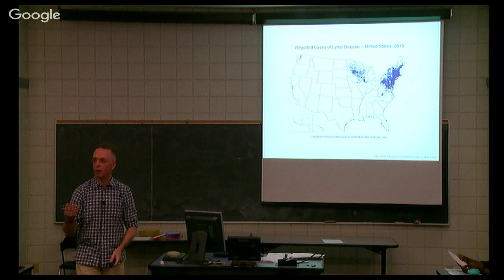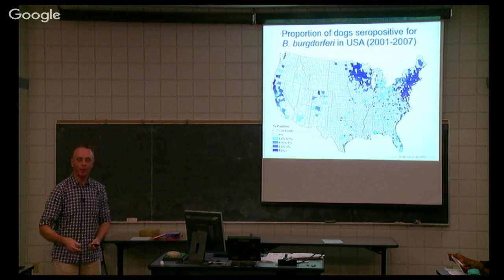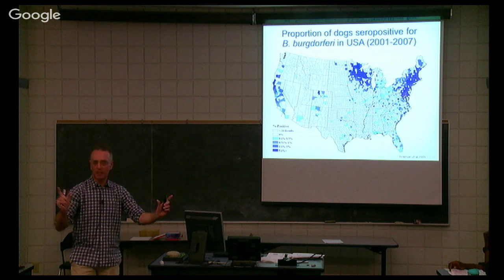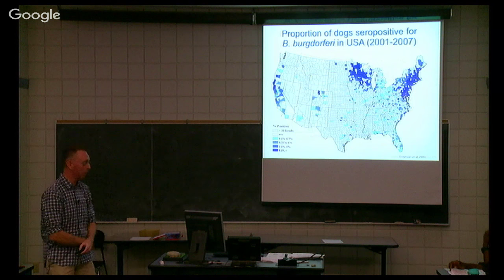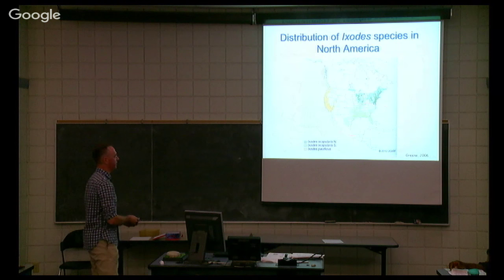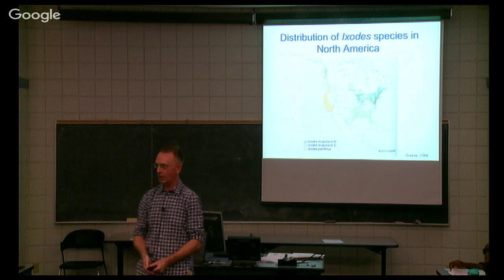What do we see in dogs? Looking at seroprevalence for the US — the darker the blue, the greater the proportion of seropositive dogs in a municipality. Dark blue is more than 5% of dogs seropositive. It's exactly the same distribution as human disease. Dogs are in fact surrogates for exposure for people — wherever you see exposure in dogs, you have to assume people are getting exposed. The reason for the southern distribution difference is that the immature stages primarily feed on lizards that aren't infected rather than wild rodents.